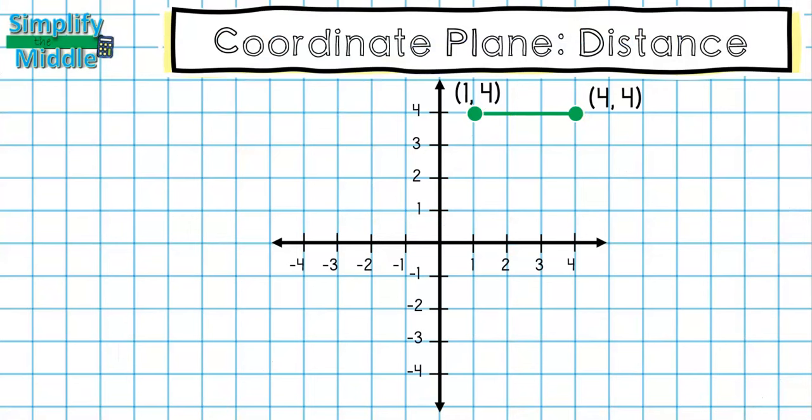So here I have two points, (1, 4) and (4, 4). I automatically know that they are horizontal because I see them graphed. But what about if I don't see them graphed?